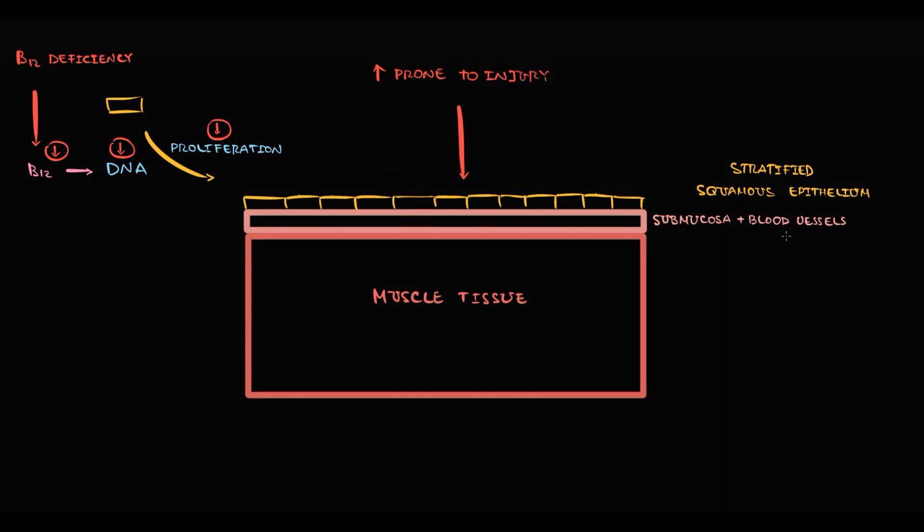But also, the thinner the epithelium, the more visible becomes the submucosa with blood vessels. And exactly this bright red color of the blood vessels causes the characteristic red color of the tongue.